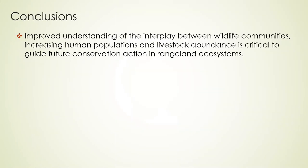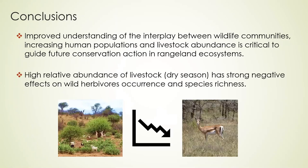In conclusion, we need to understand the interaction between wildlife, human population, and livestock abundance in order to make conservation management decisions. This data has shown that relatively high livestock abundance can lead to a decline in wildlife population and species. Therefore, we need to strike a balance between the two activities.